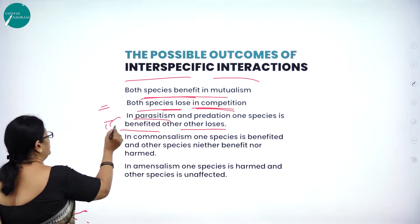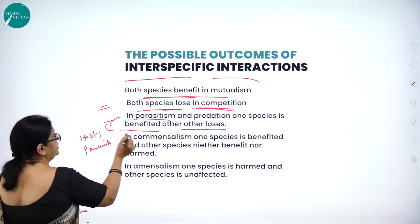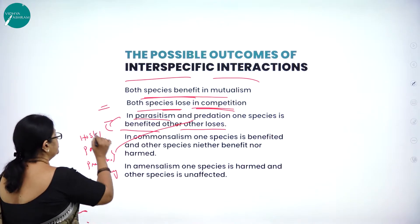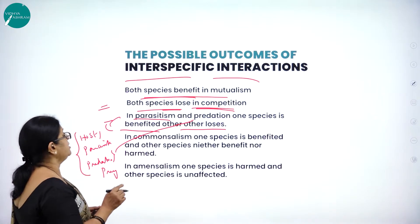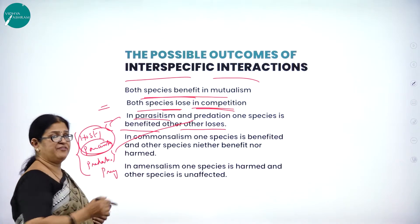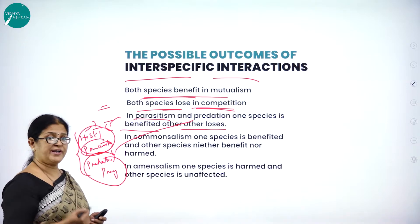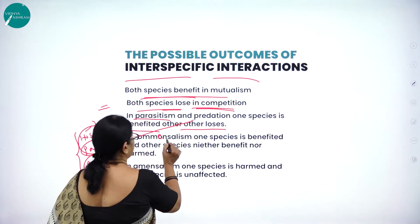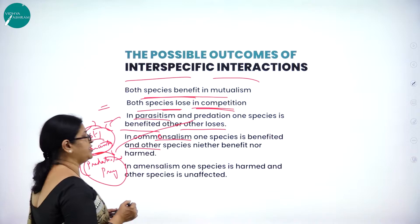In parasitism, which is an interaction between the host and the parasite, the parasite is benefited but the host is harmed. In predation, the interaction is between the predator and the prey — the predator is benefited and the prey is harmed. In commensalism, one species is benefited and the other is neither benefited nor harmed.